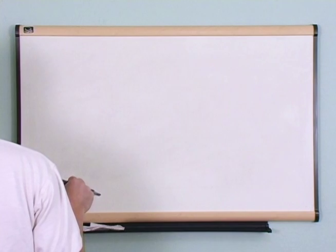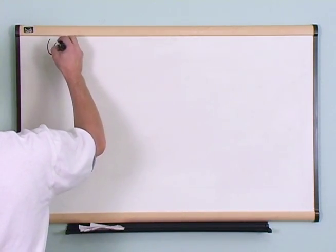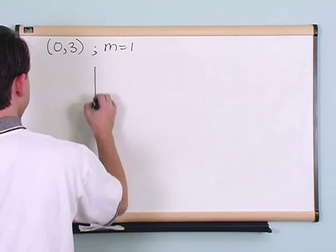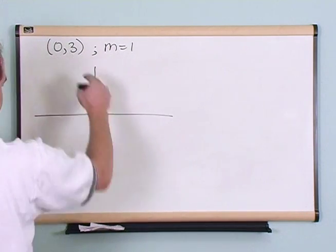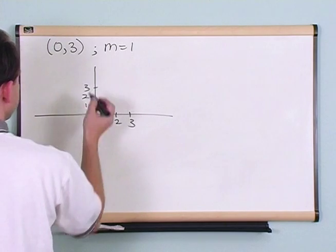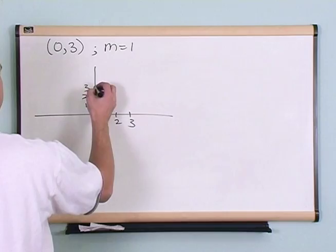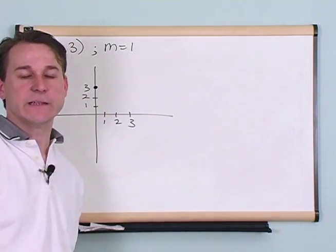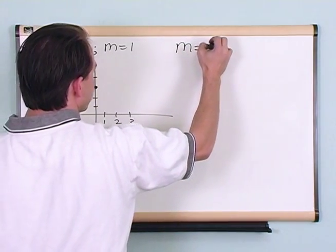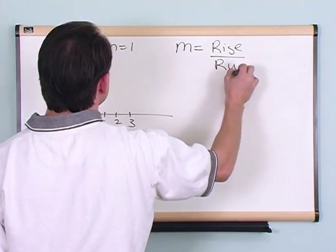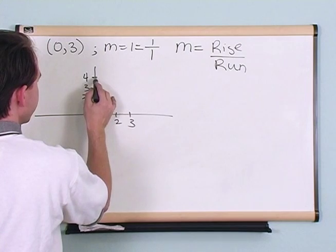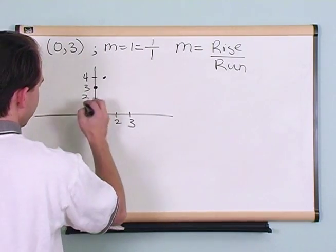Let's do some graphing. Let's say I have the point (0, 3) and the slope equals 1. I'm going to show you how to graph that. First, plot the point you know. The point (0, 3) goes right on the y-axis at 3. All I need is one more point, and the slope is very useful for that. Remember, the slope equals rise over run. A slope of 1 is the same as 1 over 1, so I rise 1 unit and run over to the right 1 unit. That gives me my second point.